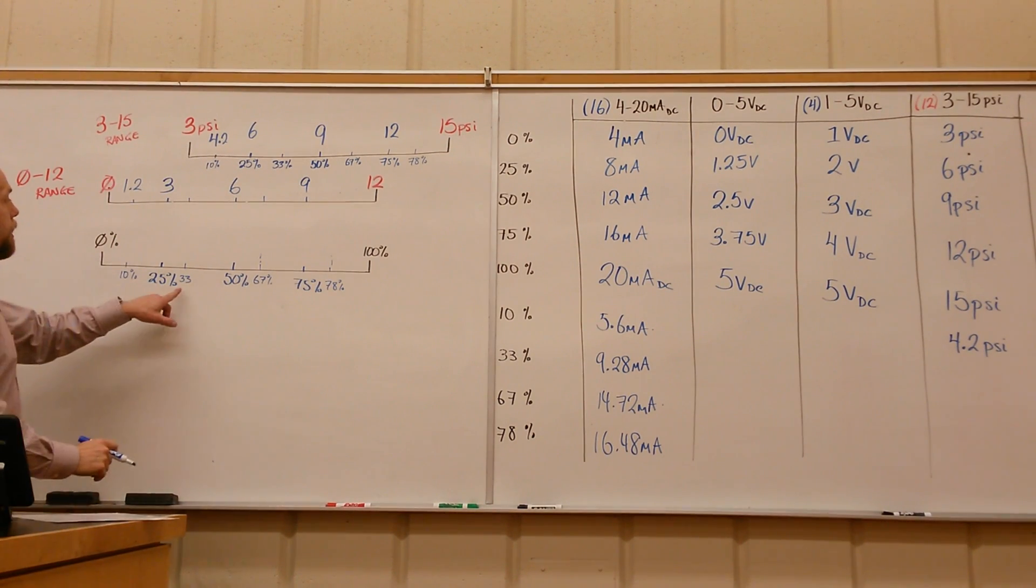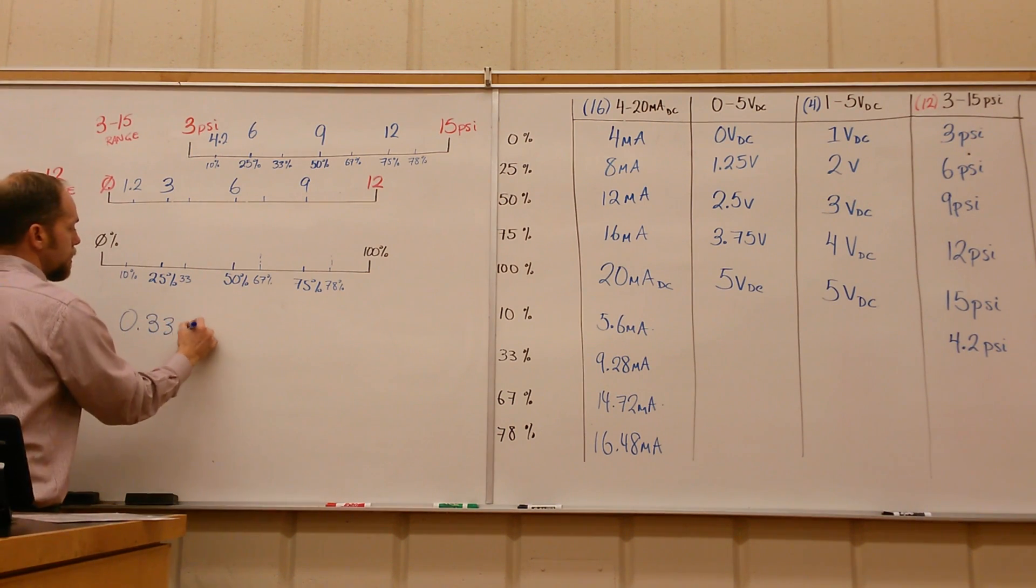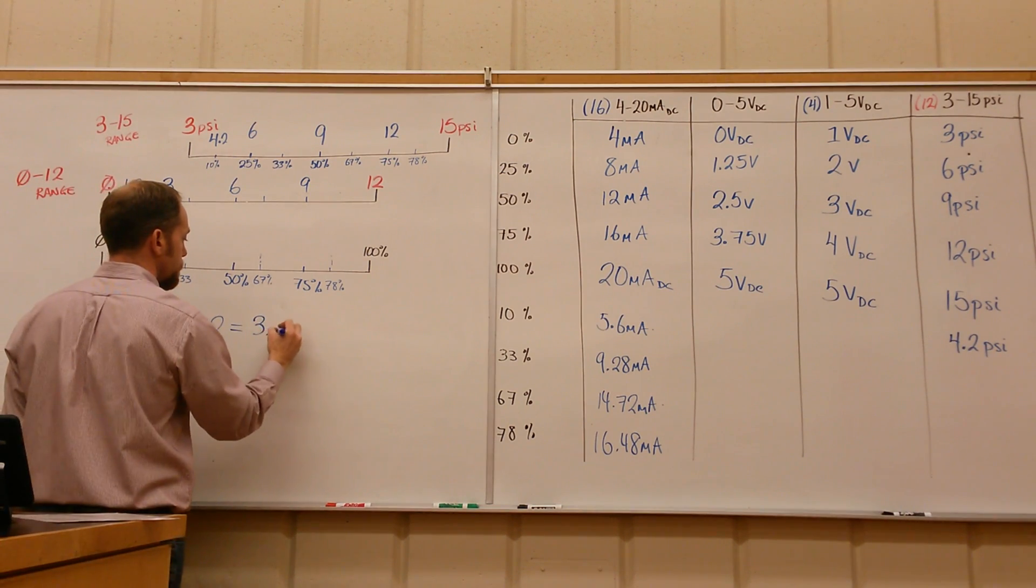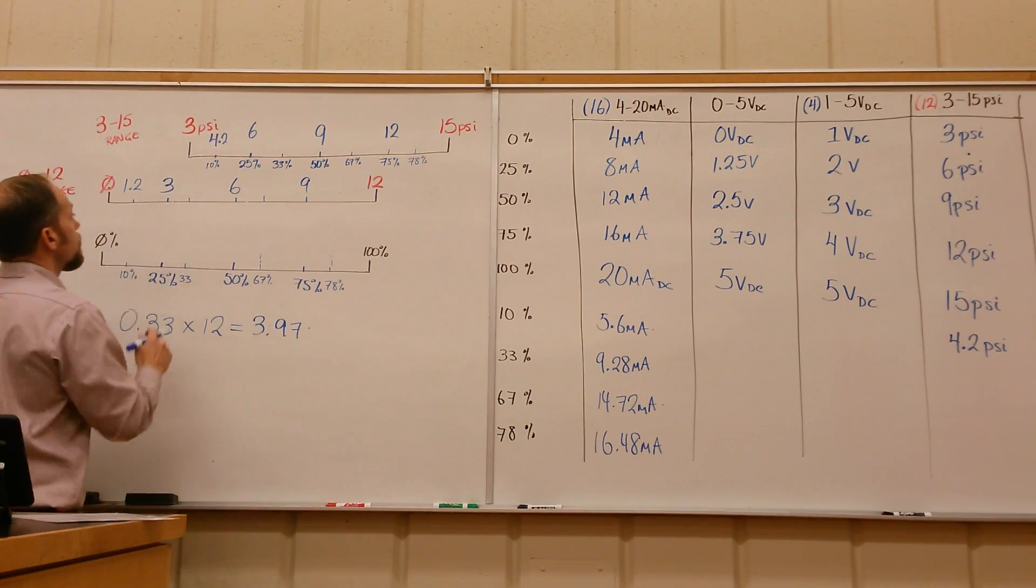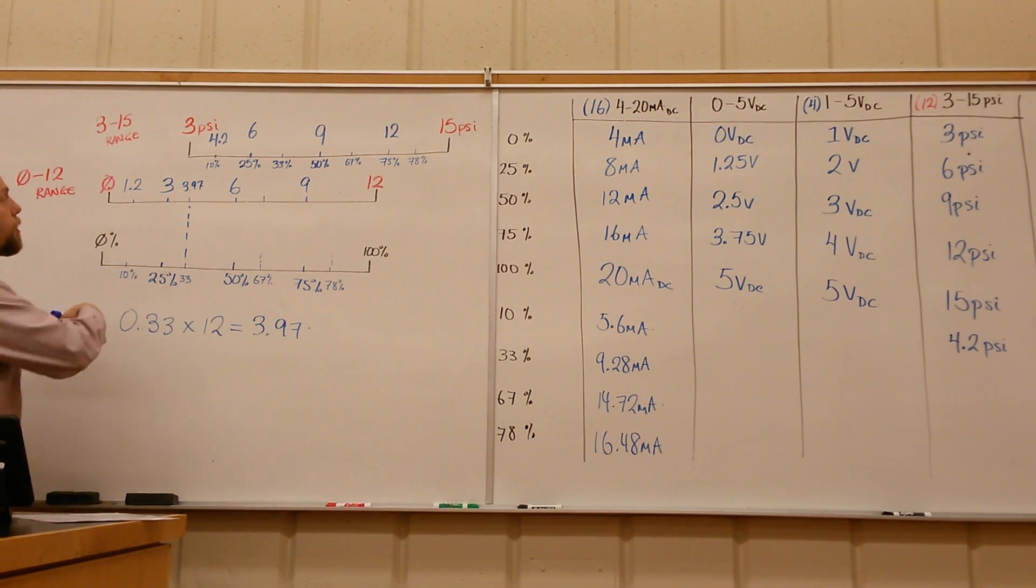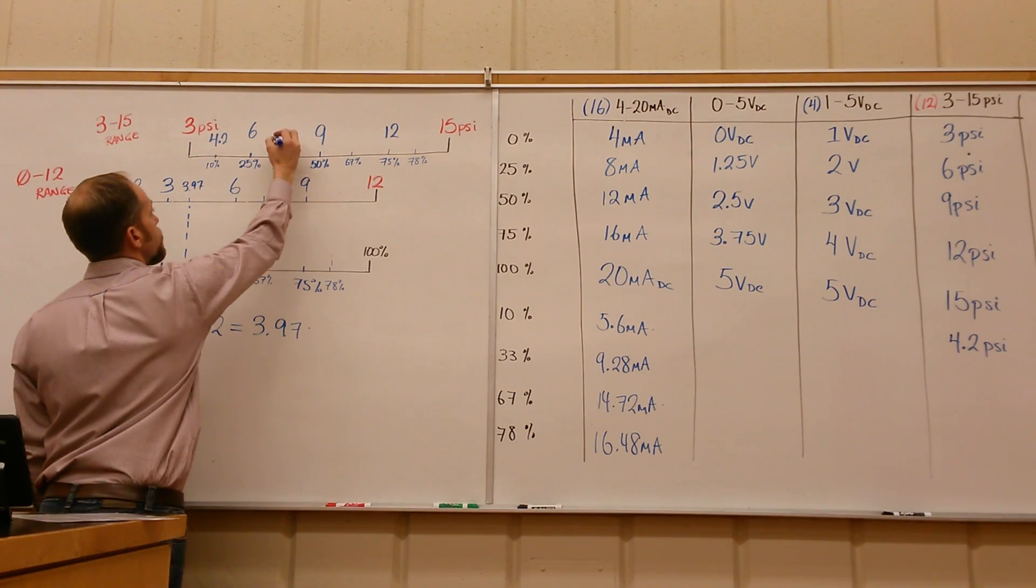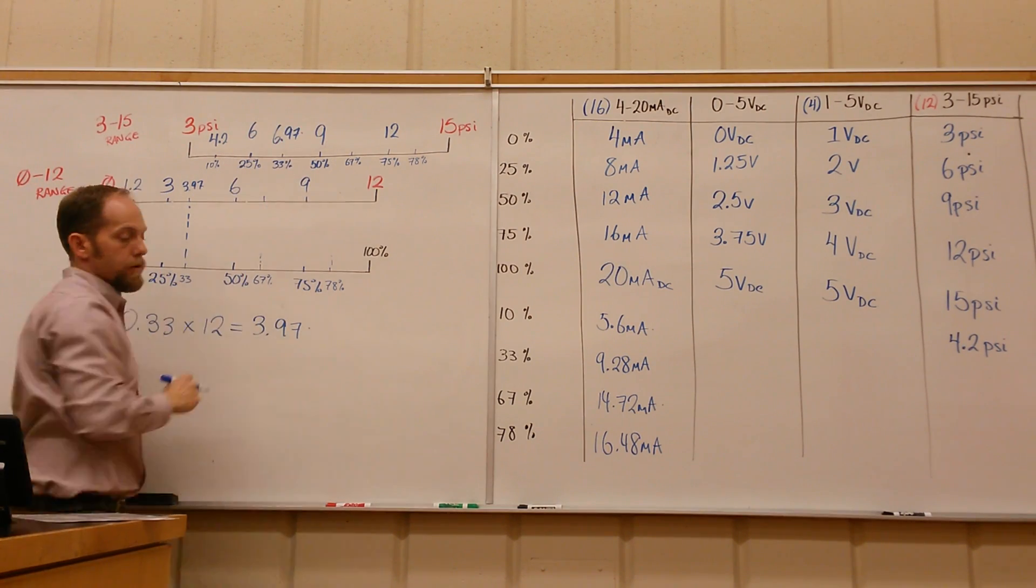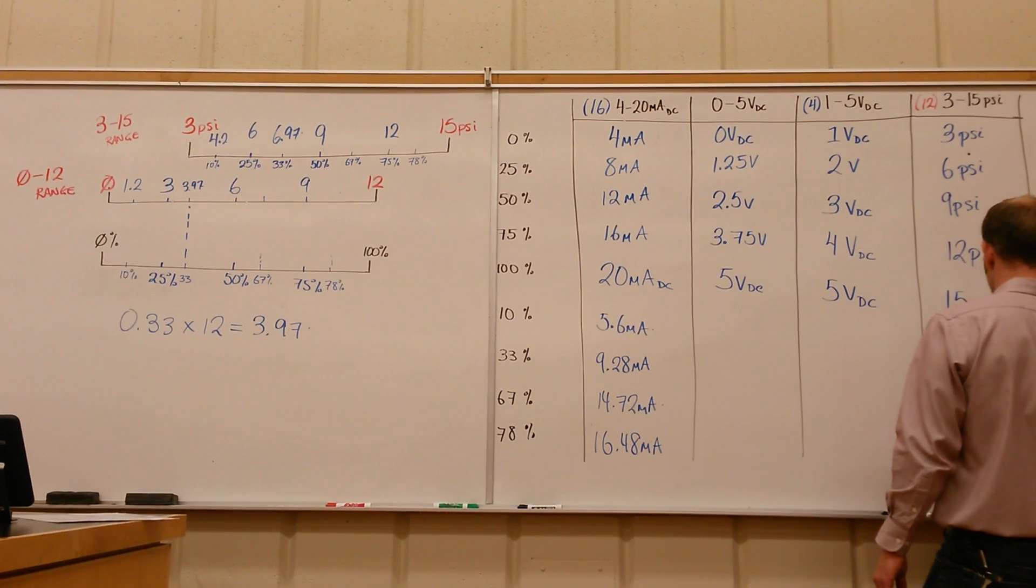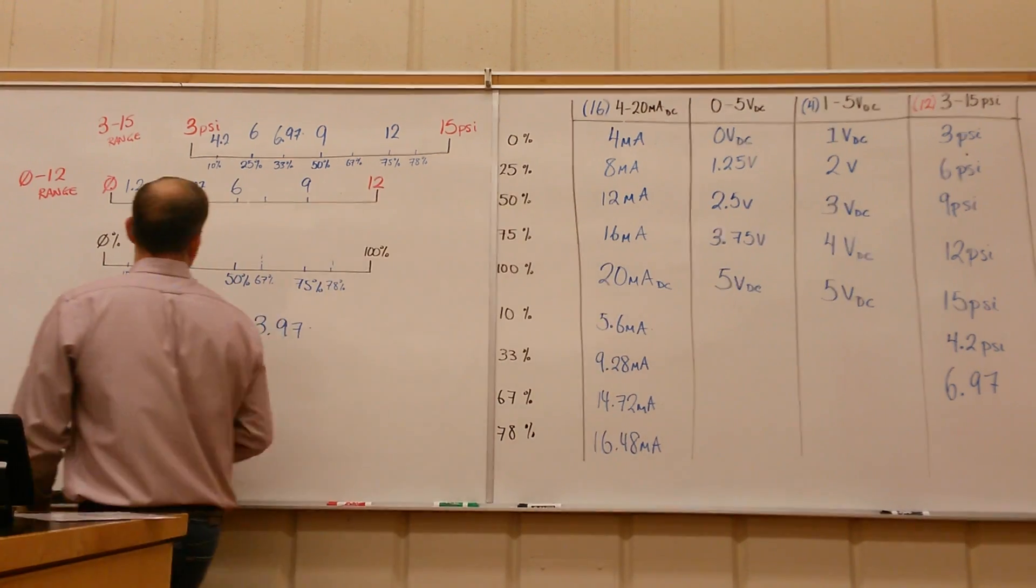33% looks like it should be just above 3 here, and 33% should be between 6 and 9 on the 3 to 15. So we take 0.33 times the 12, that ends up giving us 3.97. So 3.97 corresponding to 33%, and then we bump that up by 3. So 33% gives us 6.97 psi.